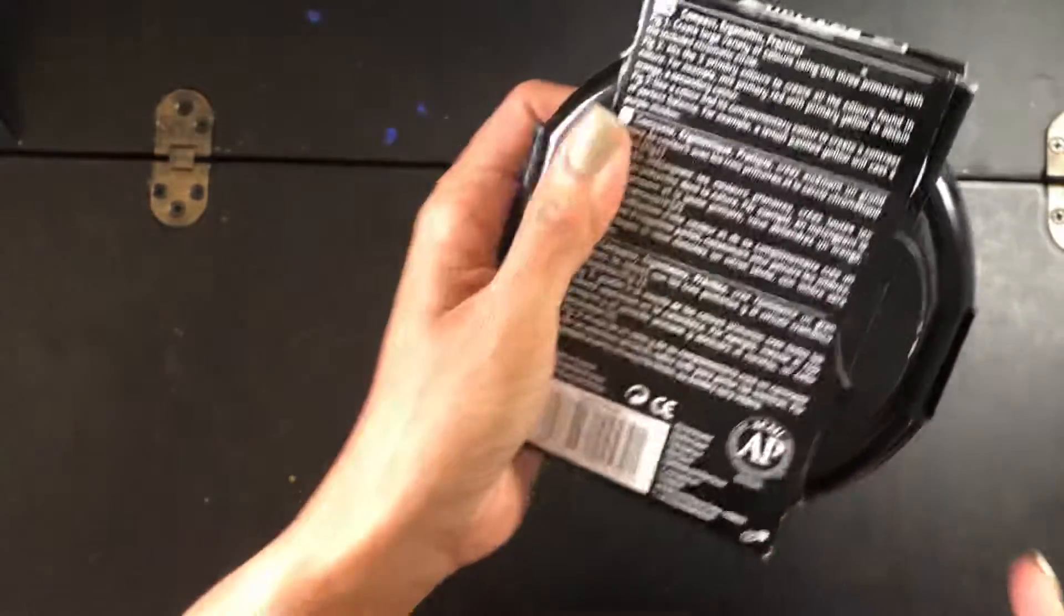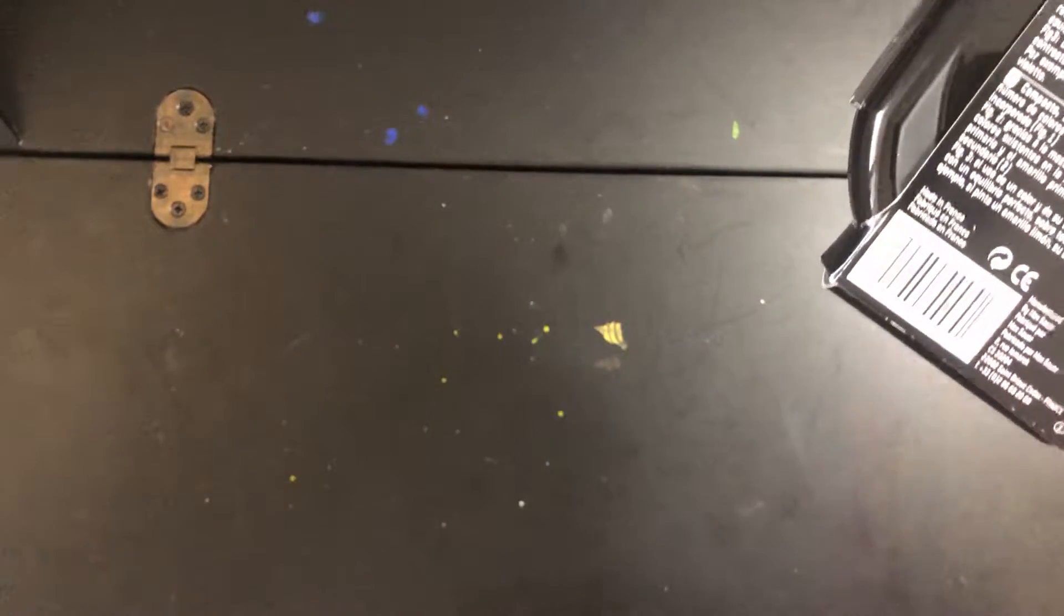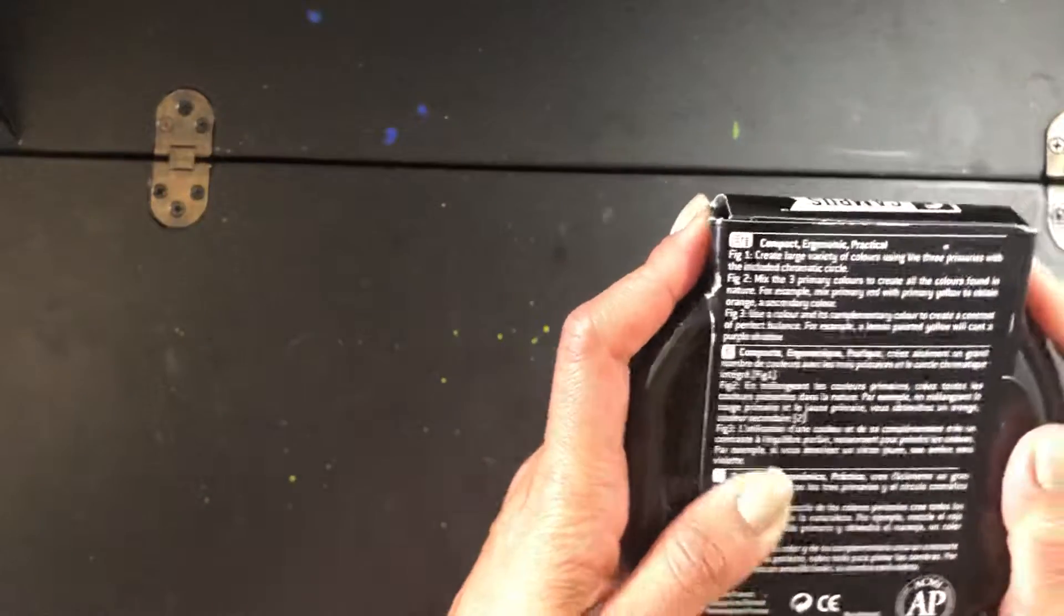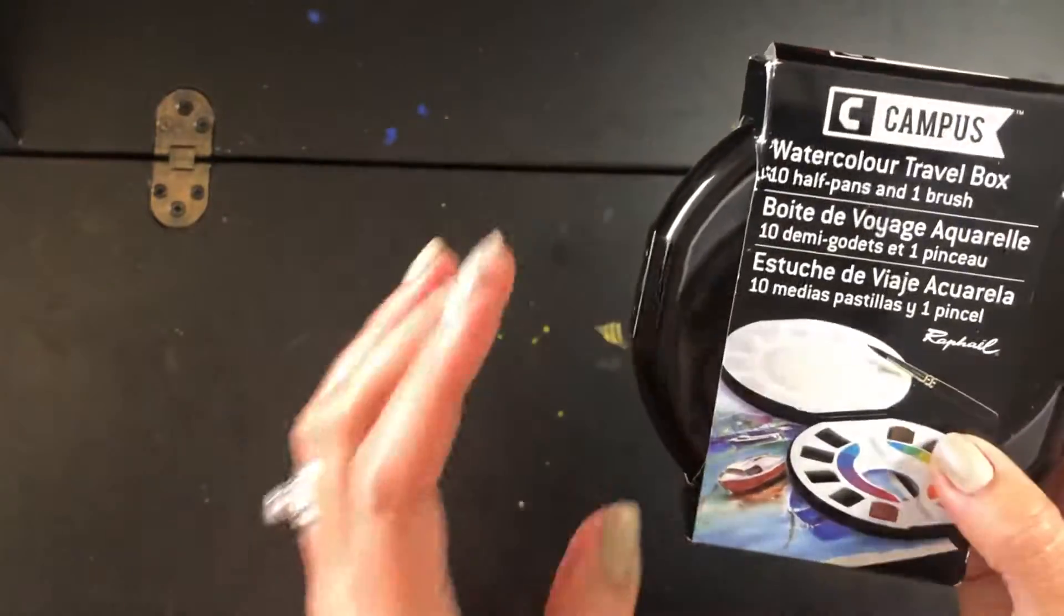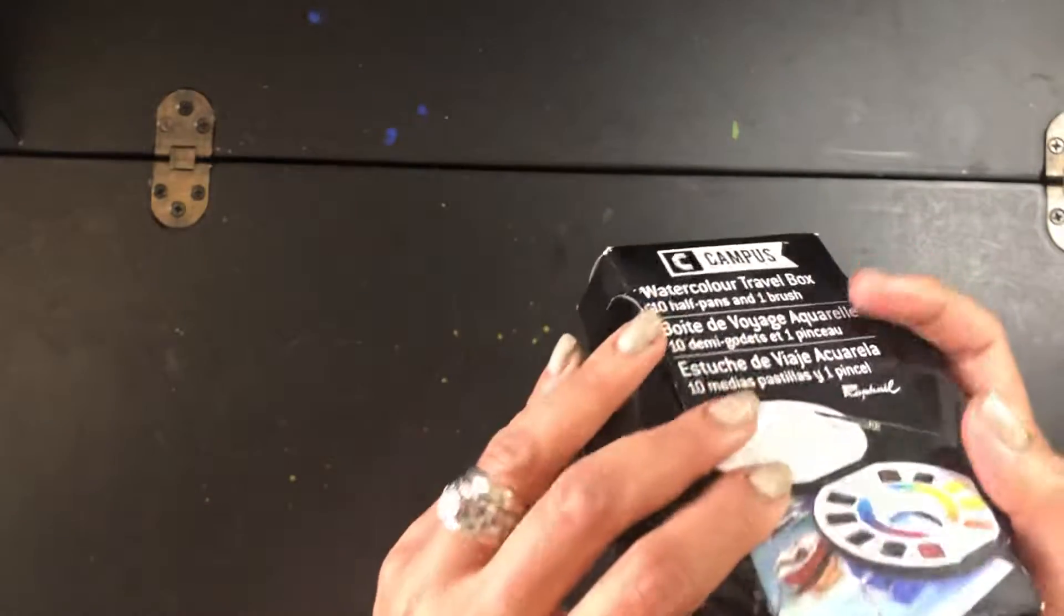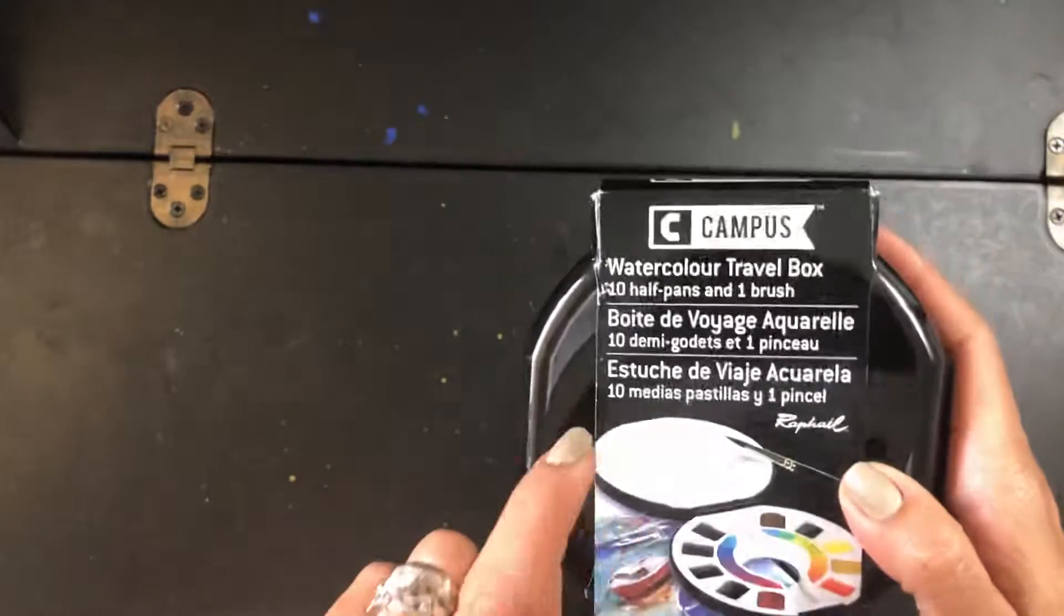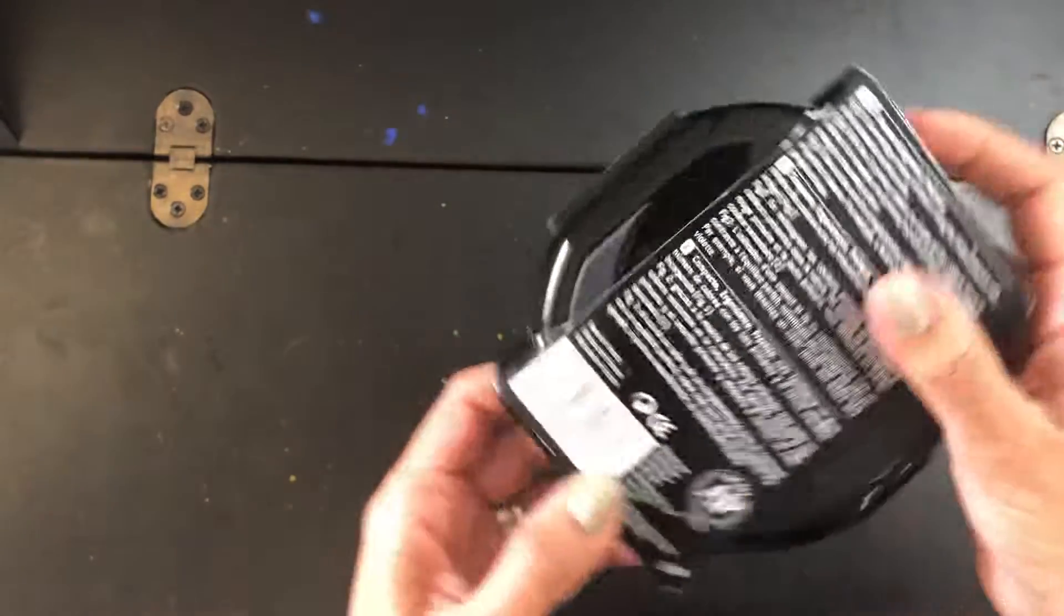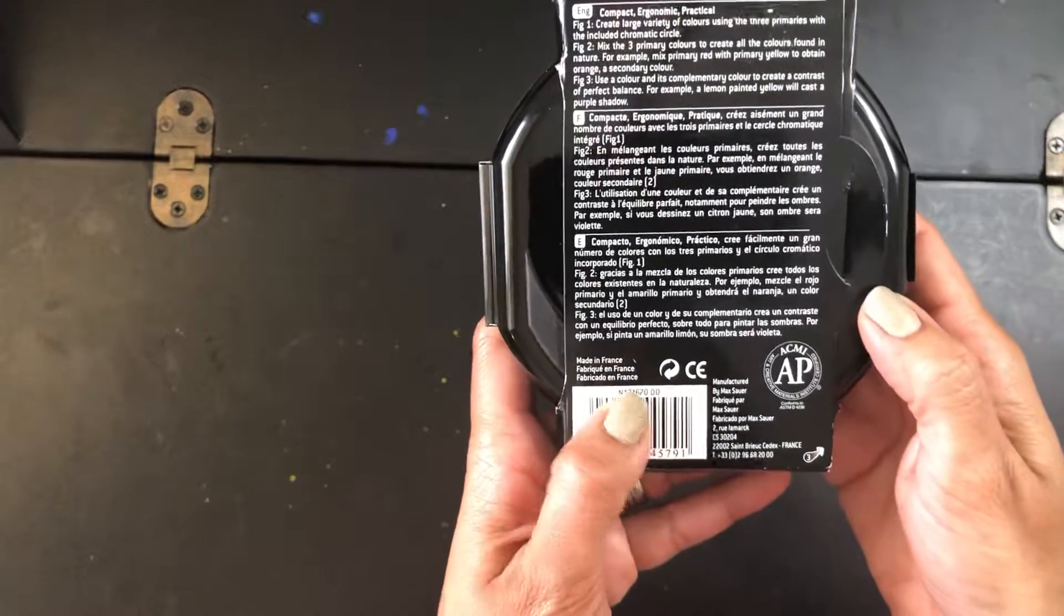But it's from an Amazon seller. I think it's called, let me see if I have the, Jerry's Arturama. Jerry's Arturama, a seller on Amazon. And I think they are an art store. In any case, it's a travel palette. It's Campus but it's made by, I think it's by Sennelier, or yeah I think it's Sennelier who makes this paints as well.